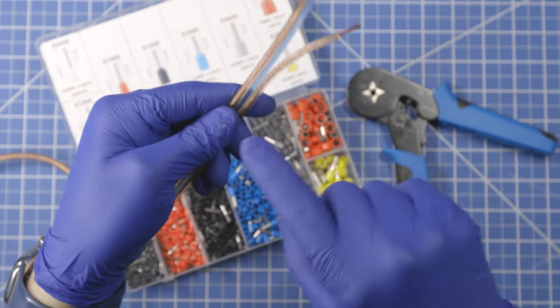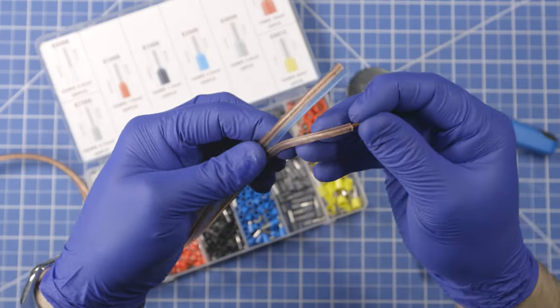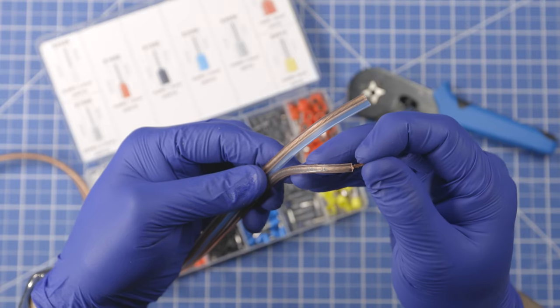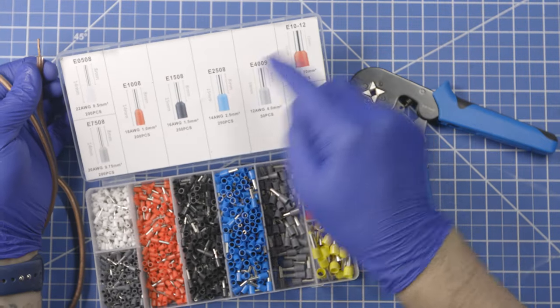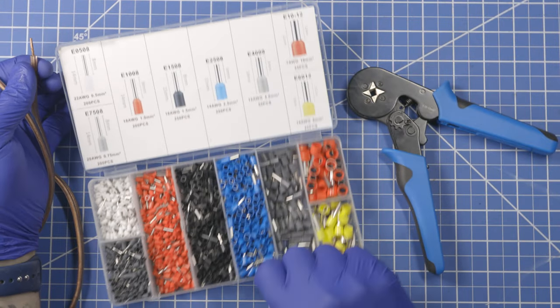So this is a 16-gauge wire, which I know because it's printed on it. It says AWG-16. And per the little chart on our kit here, 16 is the black ones.